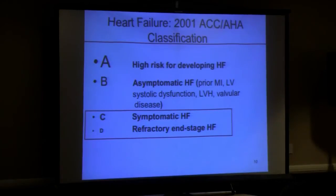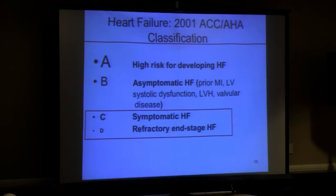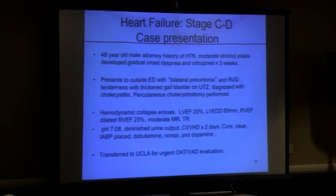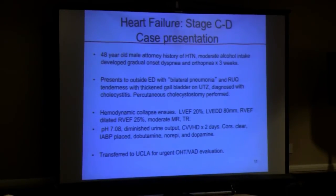Now I want to spend most of the time on stages C and D — a smaller population, but where the bulk of money is spent and the greatest clinical challenge lies. The patient: a 48-year-old gentleman with hypertension and moderate alcohol intake who developed gradual onset dyspnea over three weeks. He presented to an outside hospital with bilateral pneumonia, right upper quadrant tenderness, and a thickened gallbladder. He was diagnosed with cholecystitis and underwent percutaneous cholecystostomy rather than cholecystectomy because he looked so sick.